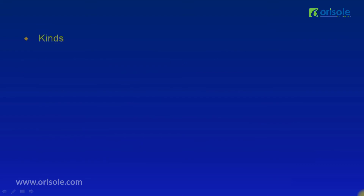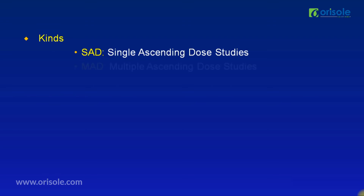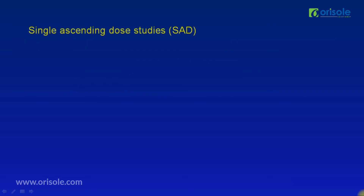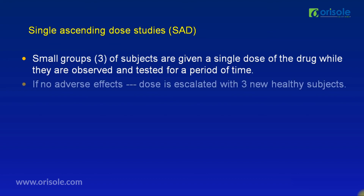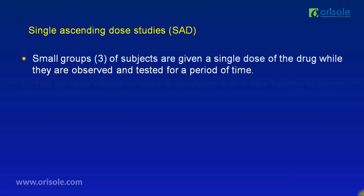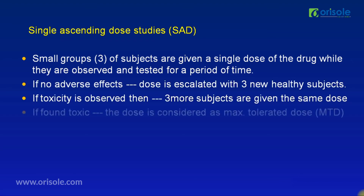The kinds of phase 1 studies include SAD (Single Ascending Dose) studies, MAD (Multiple Ascending Dose) studies, and food effect studies. In SAD studies, small groups of subjects — usually 3 — are given a single dose of the drug and observed. If no adverse events occur, the dose is escalated with 3 new healthy subjects. If toxicity is observed, 3 more subjects are given the same dose. If toxicity is confirmed, that dose is considered the Maximum Tolerated Dose (MTD).